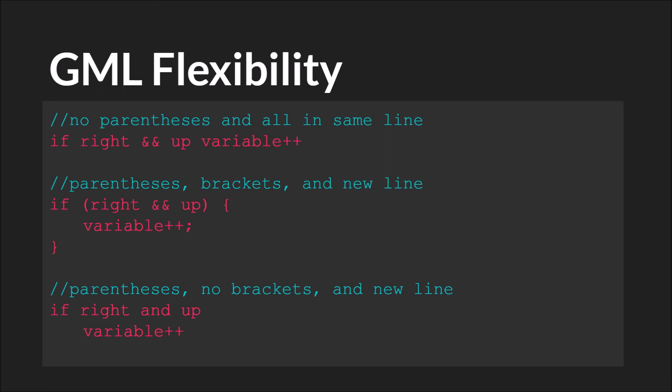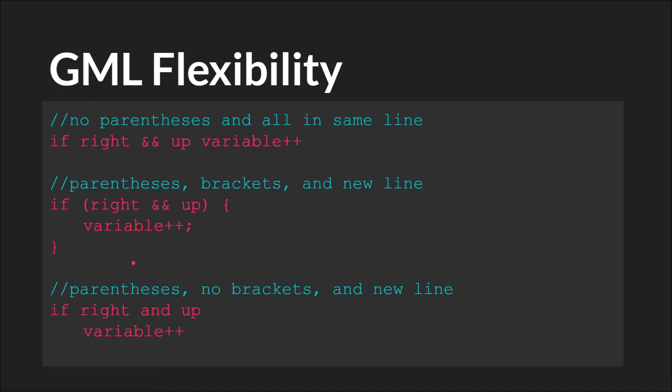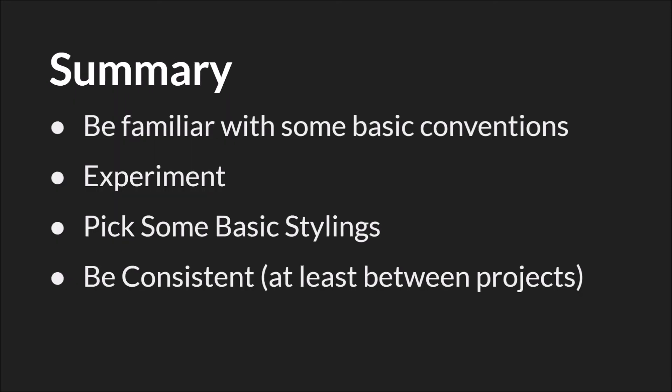One last note: GML is a very flexible language. It allows you to type a lot of different things, but just because it allows you to type something does not always mean you should take advantage of that. Everything shown here is valid code, but some things are easier to read than others. Getting into the habit of using parentheses, semicolons, and brackets can also help you in the long run with other, more strict programming languages. In summary, you should be familiar with some basic conventions of code styling, experiment to find what works for you, and then pick a basic style and be consistent, at least inside a project.